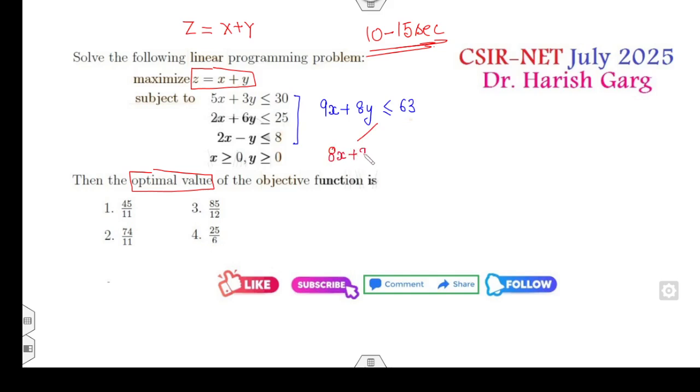Now your target is X + Y. There are two choices: either you can write as 8X + 8Y ≤ 63 - X, or you can write as 9X + 9Y ≤ 63 + Y. But make sure your target is to find the maximum value. X is positive, so that number will be less than, because minus X will be less than 0.